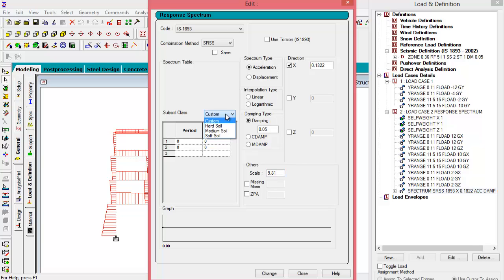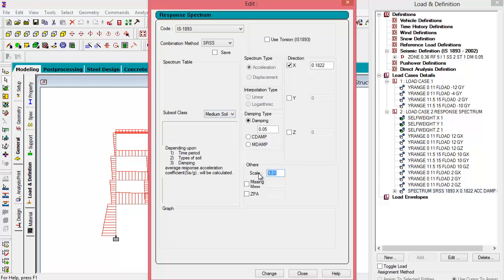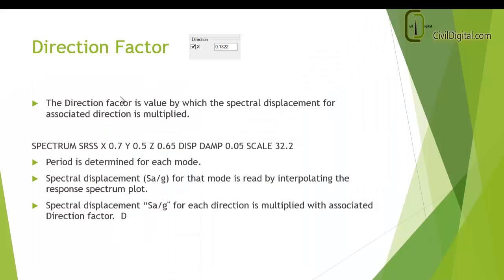Since we used a predefined soil subclass spectrum, we don't have to specify a scale factor. We can either specify it as 1 or just leave it as it is so that STAAD will accept a default value of 1. Now let's come to the direction factor that we provided in the X direction as 0.1822.